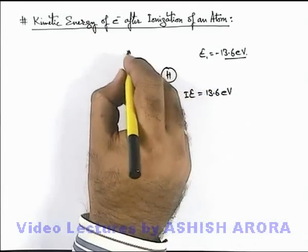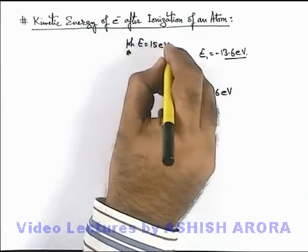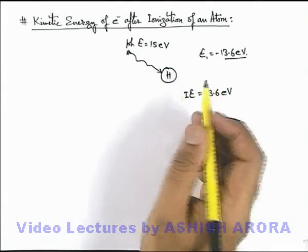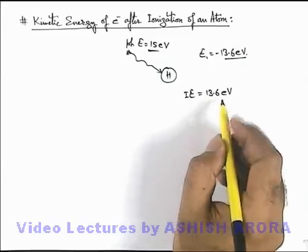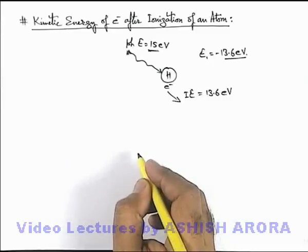Now say if a photon of energy 15 electron volts is supplied, then electron will certainly excite as this energy is more than 13.6 electron volts, and electron will be ejected out from the hydrogen atom.